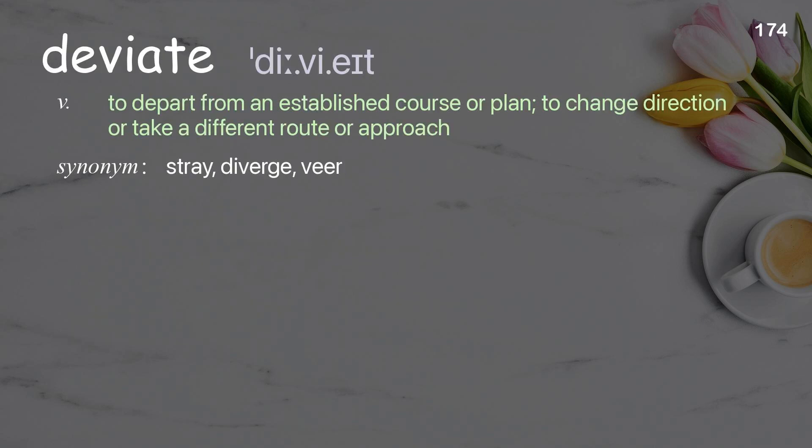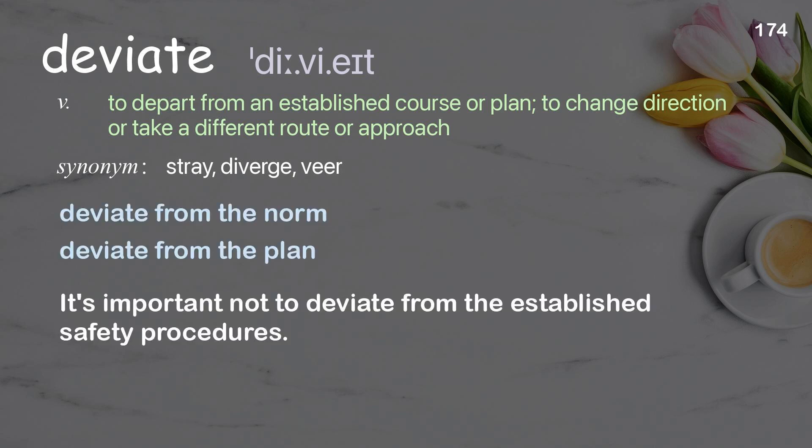Deviate: To depart from an established course or plan; to change direction or take a different route or approach. Examples: Deviate from the norm. Deviate from the plan. It's important not to deviate from the established safety procedures.